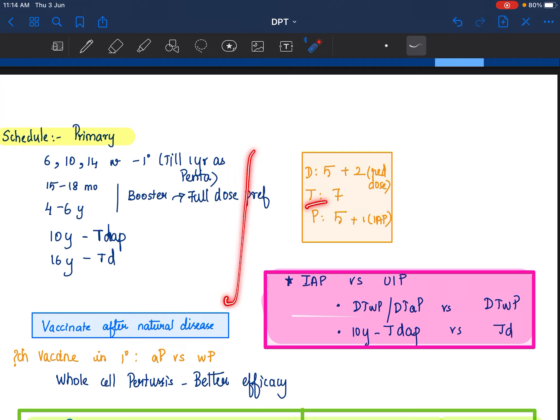Tetanus is total 7 doses. Your pertussis will be 5 doses plus 1 extra if the child is receiving the 10 years booster via IAP schedule.